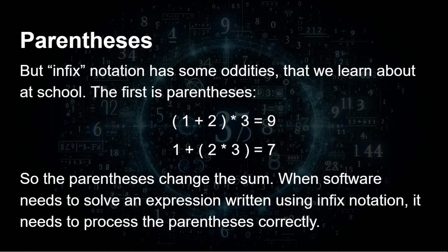There are some problems with infix notation — some oddities — and we learn about these at school. The first is parentheses; I'm going to call them brackets. So one plus two in brackets, multiplied by three, gives you nine because you calculate the one plus two first. But one plus brackets two times three, close brackets, gives you seven because you work out two times three first. By putting in the parentheses, we change the answer.